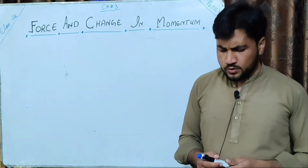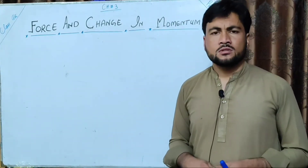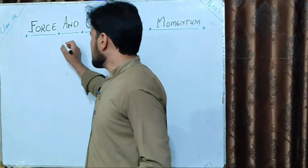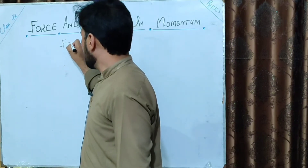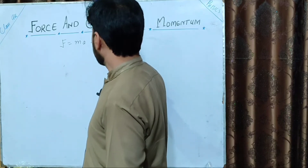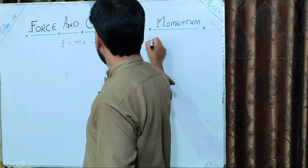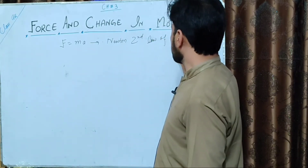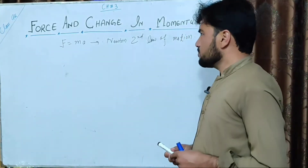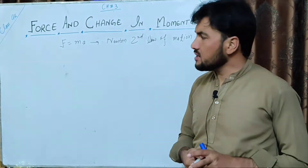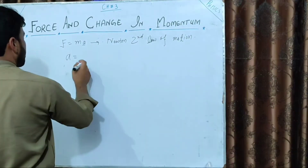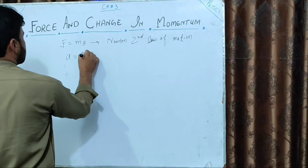From the previous lectures, Newton's laws of motion were discussed. Newton's second law of motion states that force is equal to MA. By definition, acceleration is delta V divided by delta T.